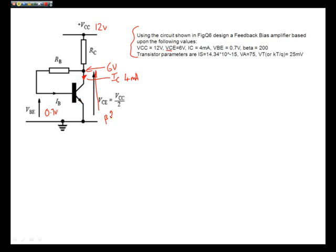VBE is said to be 0.7 volts. The value of beta for this circuit is 200. We have got some other parameters as well such as IS and early voltage and V2.